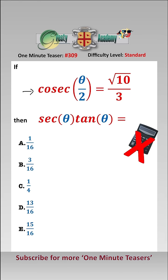So as cosec theta over 2 is root 10 over 3, then we know that sine of theta over 2 is 1 over that, which is 3 over root 10.